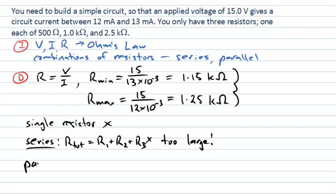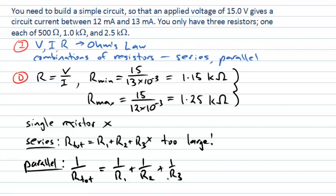What about combining them in parallel? When resistors are combined in parallel, the inverse of the total resistance is the sum of the inverses. This means the total resistance in a parallel combination is always smaller than the smallest member. If we combine all three — using 0.5, 1, and 2.5 kΩ — let's do that calculation quickly.